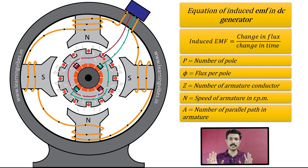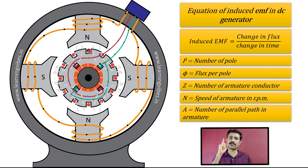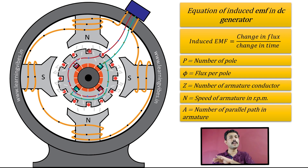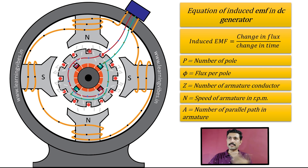Now with this brief information, we will move to derive the equation. To simplify things, we will assume only one conductor. We assume that there is only one conductor in this complete machine. We will derive the equation for one conductor, and then we will add all the EMFs induced in different conductors to get the final equation.